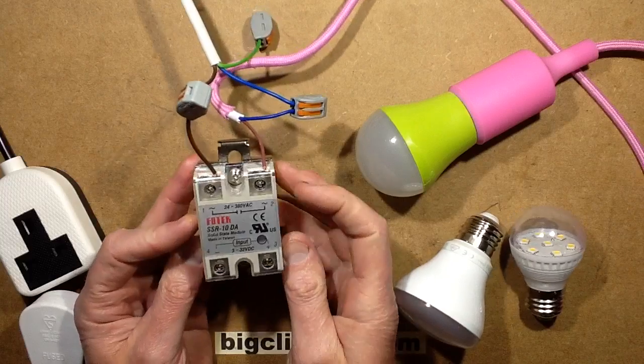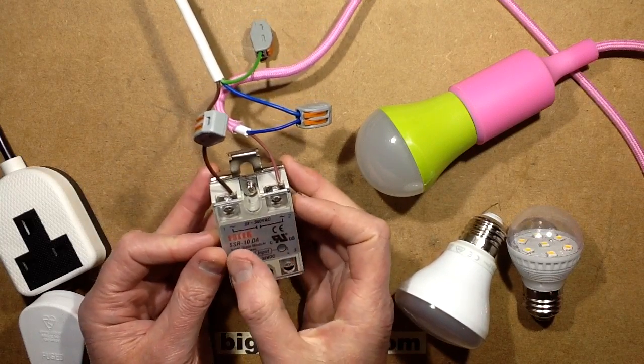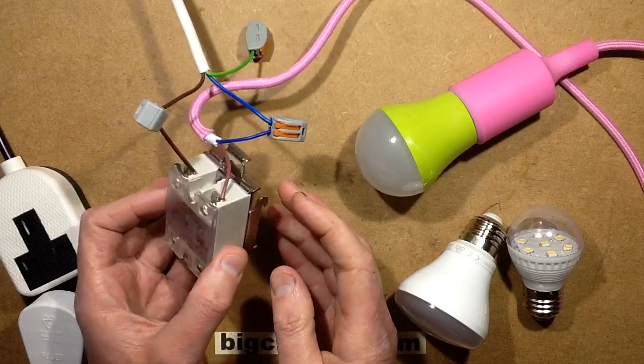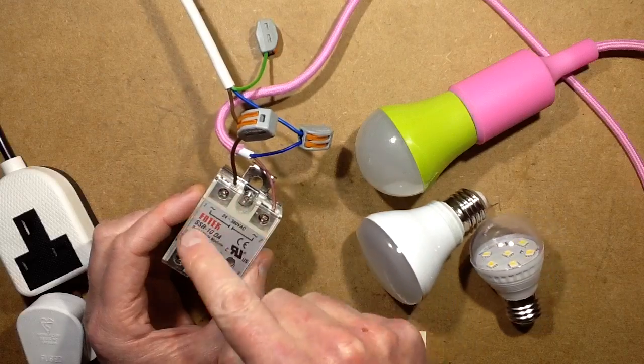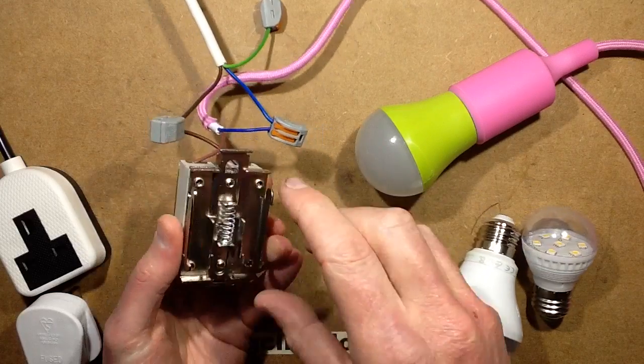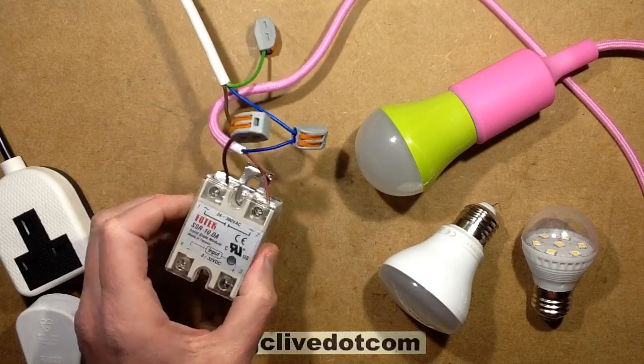So to explain that, I've got this generic eBay Fotek solid-state relay. I don't know if it actually is a Fotek one or a clone. I'm using this one because it's got this nice plastic cover over the terminals and also it's got the DIN rail mounting mechanism in the back. It's really quite nice, the stuff you can get off eBay.